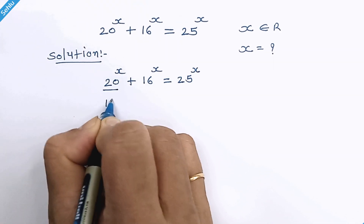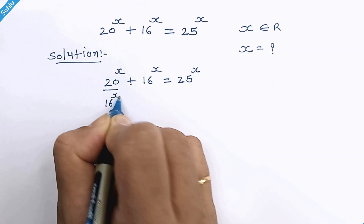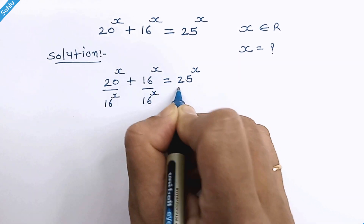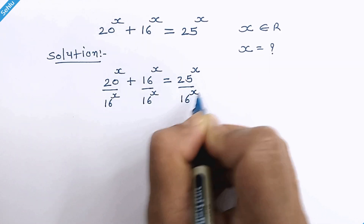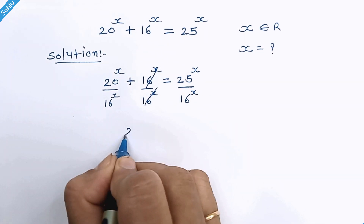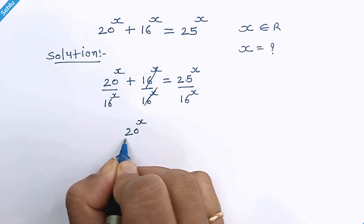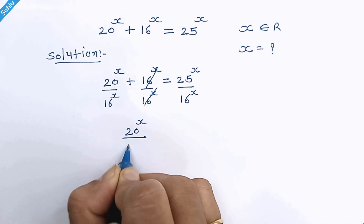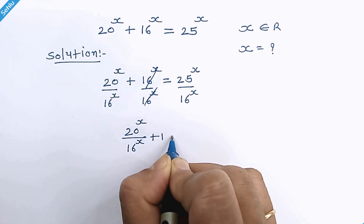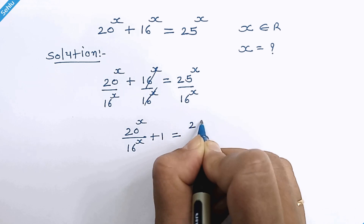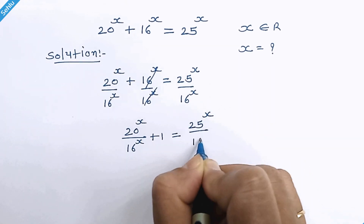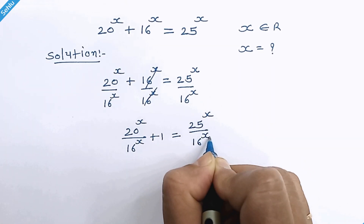In the first step, we will divide both sides by 16 raised to x. The 16^x terms cancel, giving us: 20 raised to x over 16 raised to x, plus 1, is equal to 25 raised to x over 16 raised to x.